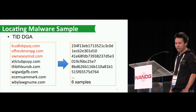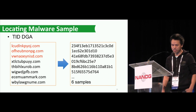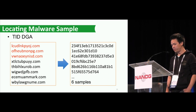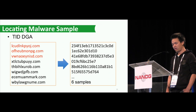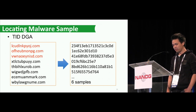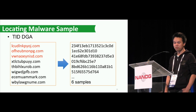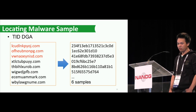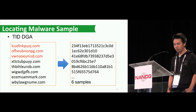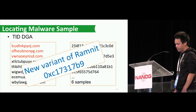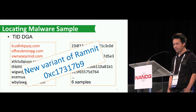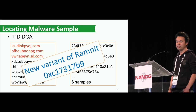Recap: we start from the highly suspicious TID DGA cluster, use DNS-malware pairs to locate the malware sample, and then do reverse engineering to figure out the algorithm. Then we can confidently generate the domains of this new variant.